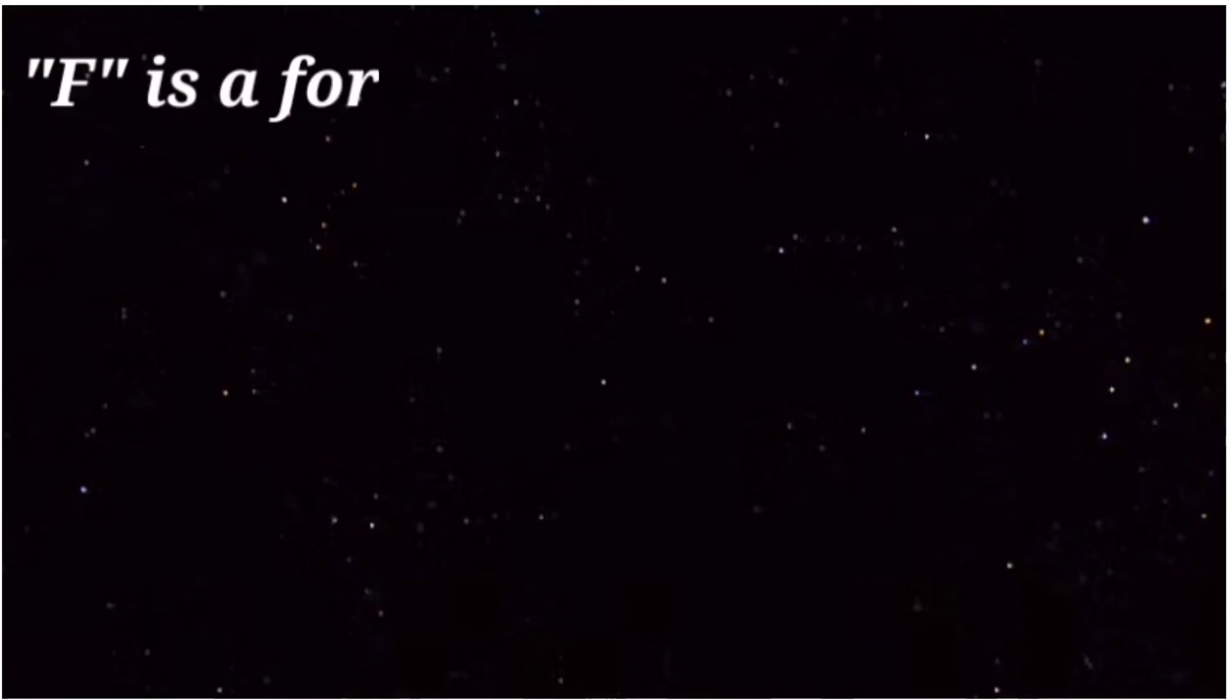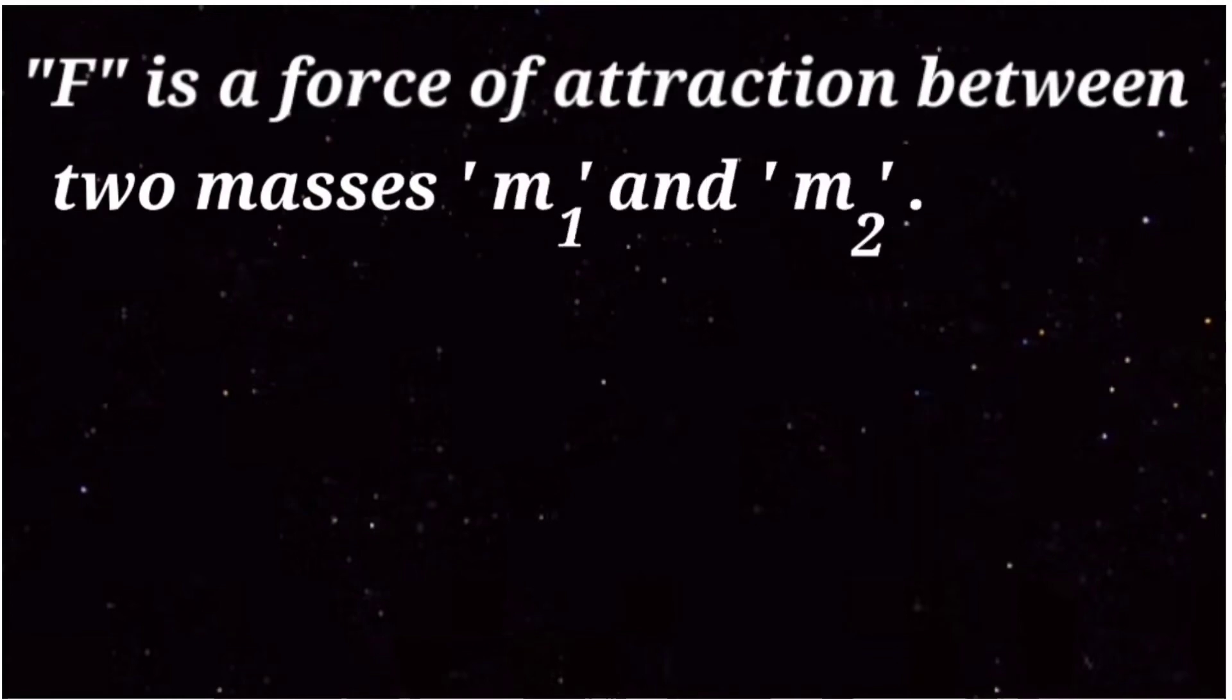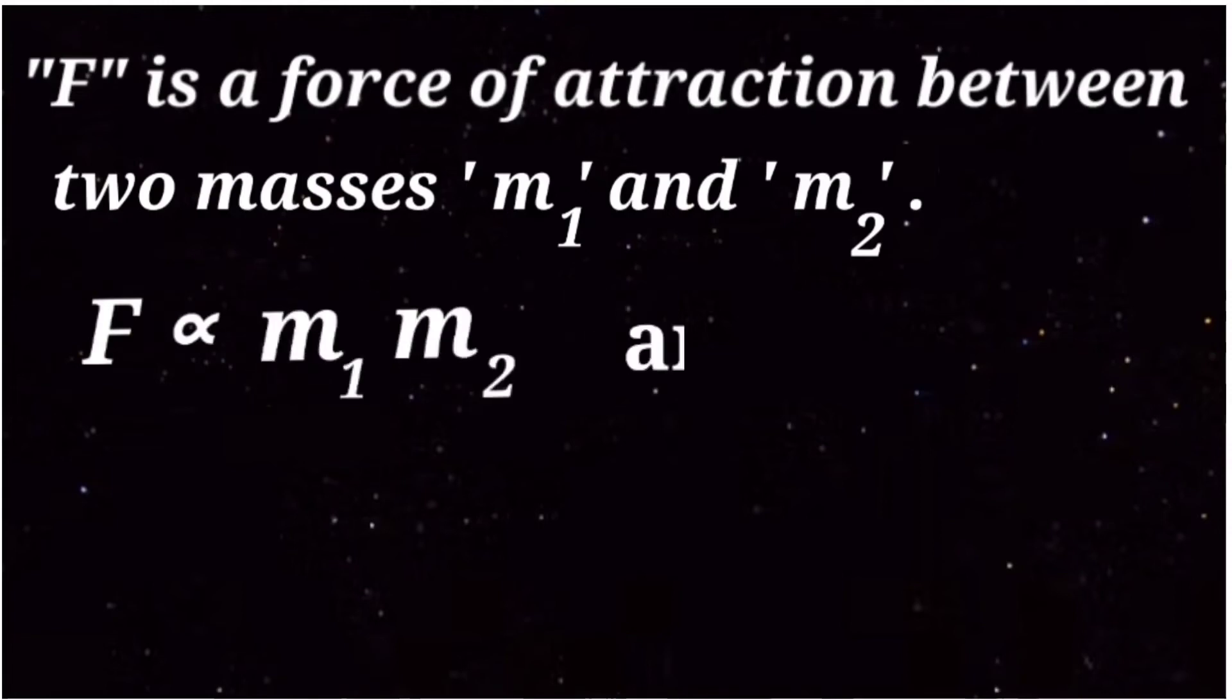F is the force of attraction between two masses M1 and M2. F is directly proportional to the product of masses. This means if the masses are higher, the force of attraction is greater, and if masses are lower, the force of attraction is smaller. And then F is inversely proportional to d squared.